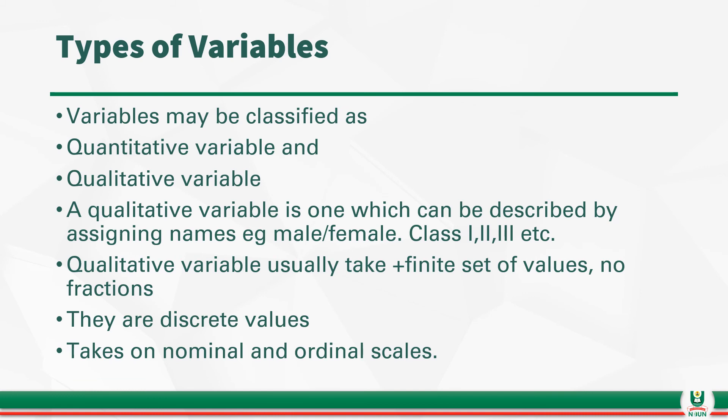A qualitative variable usually takes finite values. That is, there is no fractions among them. You cannot have half female, half male. But they are just either male or female. So, the number is finite. Then, these numbers can also be said to be discrete because you don't have fractions. You cannot have fractions. So, all the qualitative variables can be measured on either nominal or ordinal scales.